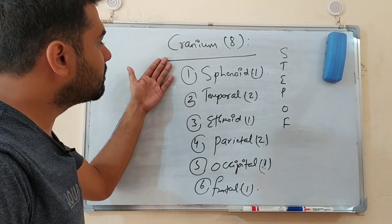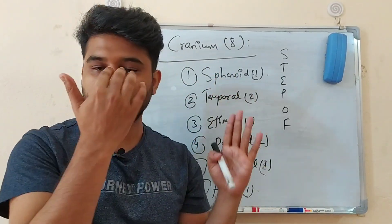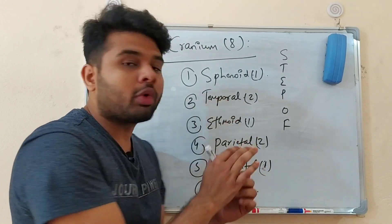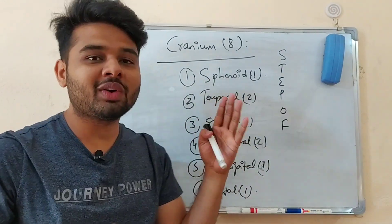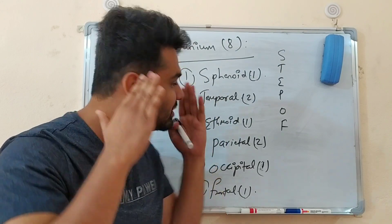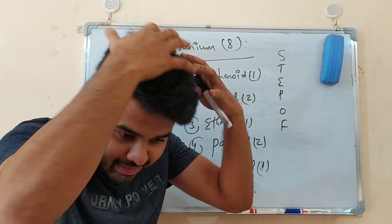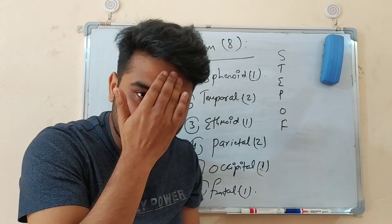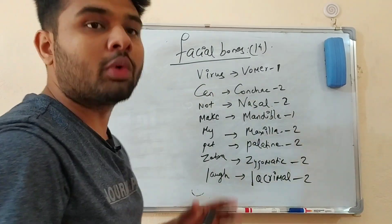The cranium bones include Sphenoid bone, Temporal bone — there is one Temporal bone on each side. Then Parietal bone — we have a couple of parietal bones. Now we have completed the cranium bones; now we move to the facial bones.